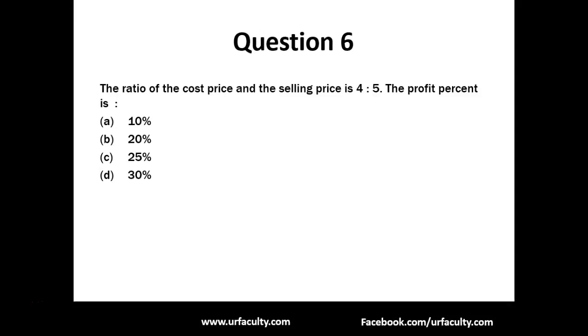Question 6: The ratio of the cost price and the selling price is 4:5. The profit percentage is? For such questions when they are given a ratio, the first step is: cost price equals 4x, selling price equals 5x. They are in proportion so we put 4x and 5x.